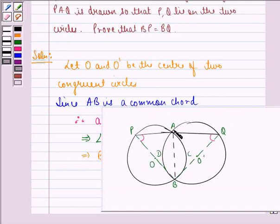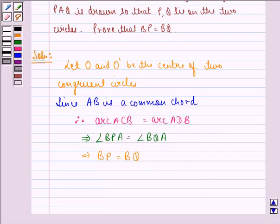And since angle BPA is equal to angle BQA, so BP will be equal to BQ. Because if we consider this as a triangle, then BP and BQ are two sides opposite to these two angles. Since these two angles are equal, therefore sides opposite to them will also be equal. So we have BP equal to BQ.